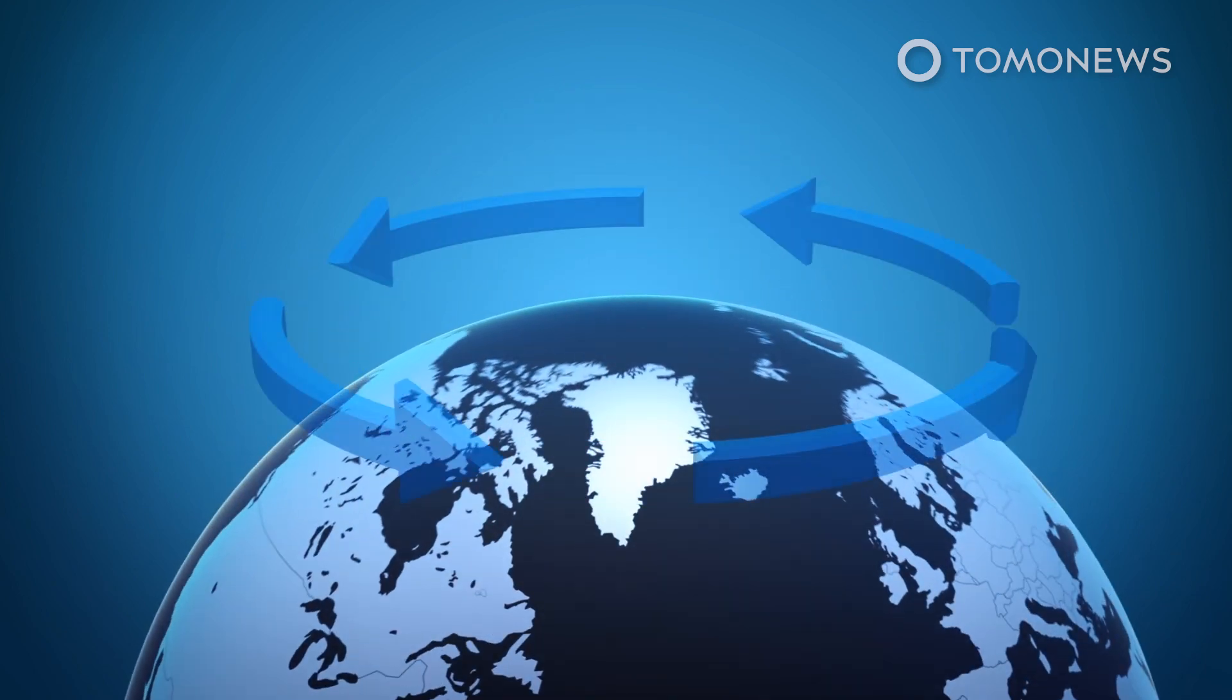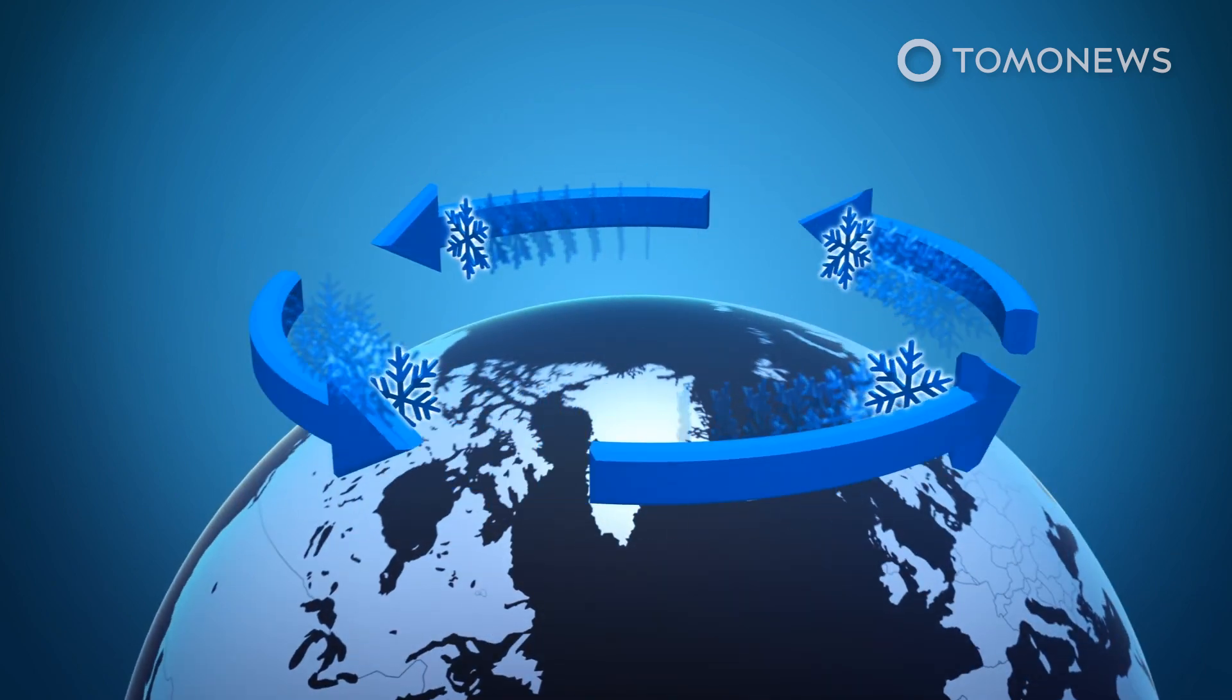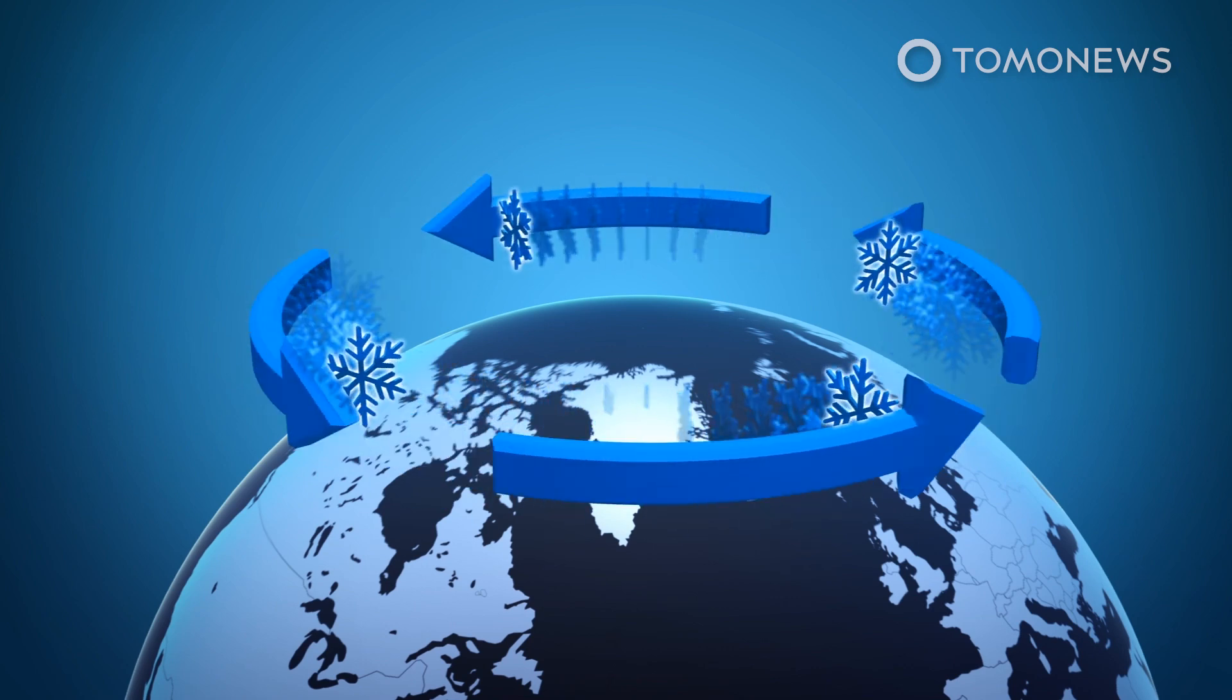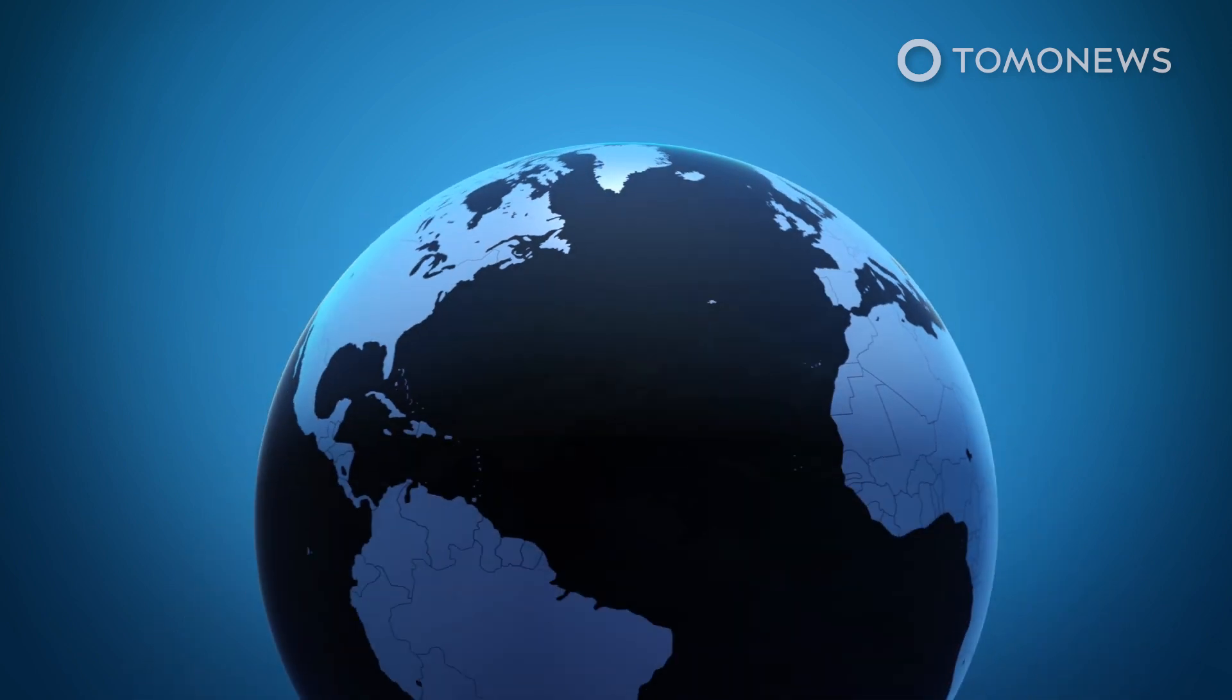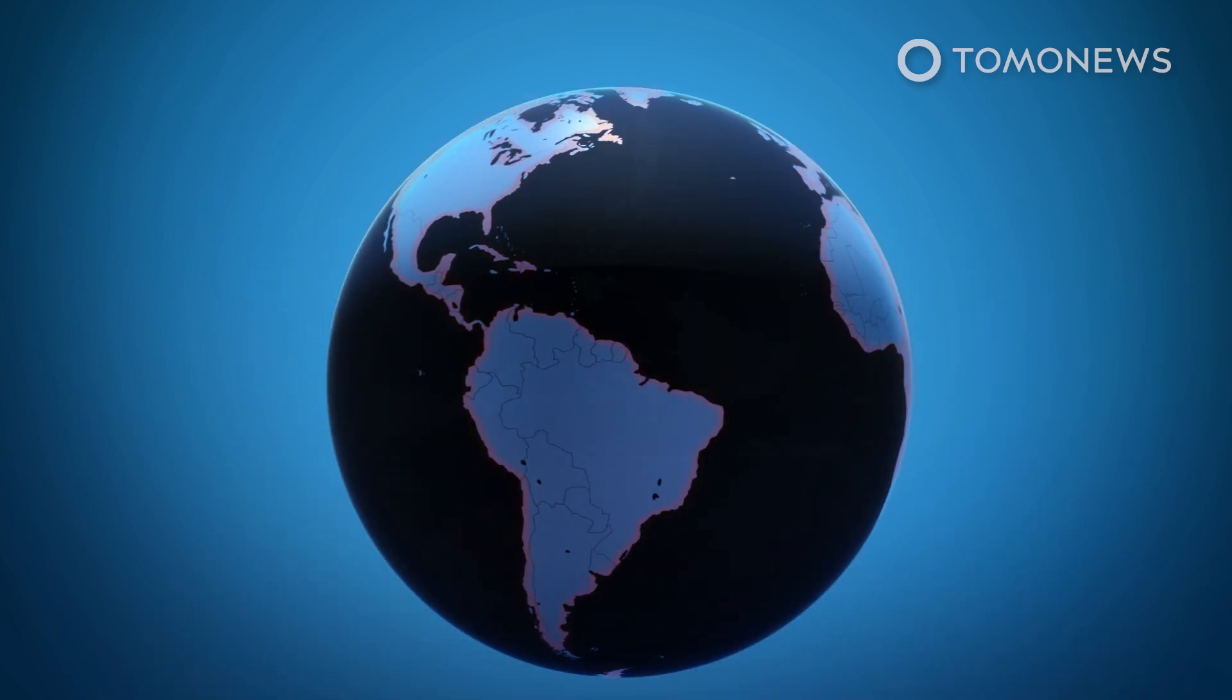Citing the center's director Mark Ceres, NBC reports the AO is having a positive phase with the flat jet stream circle, which entraps the cold air over the Arctic region.